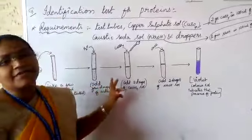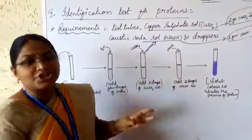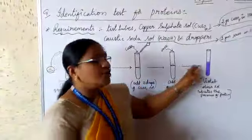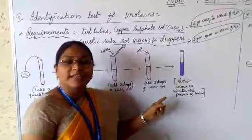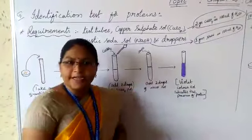You can observe a clear identification—the colour will change into violet colour. The violet colour solution indicates the presence of protein in that particular food. You understand?